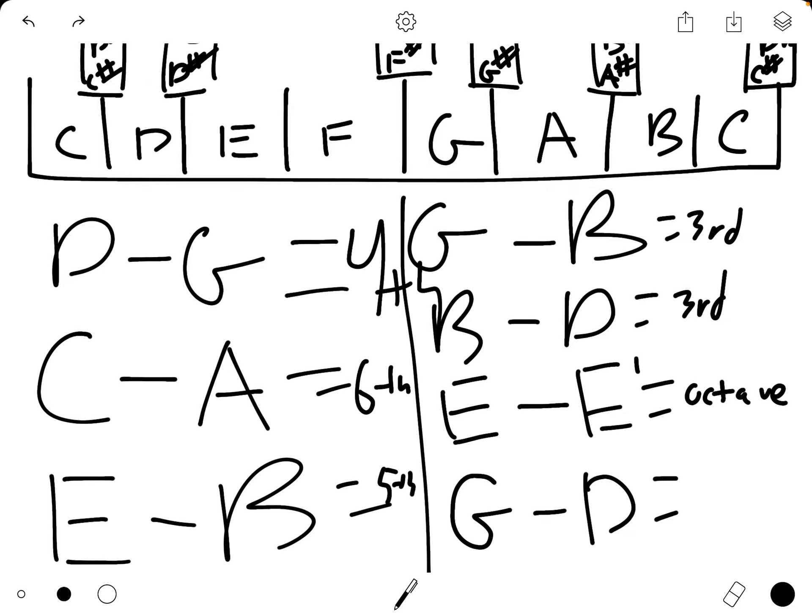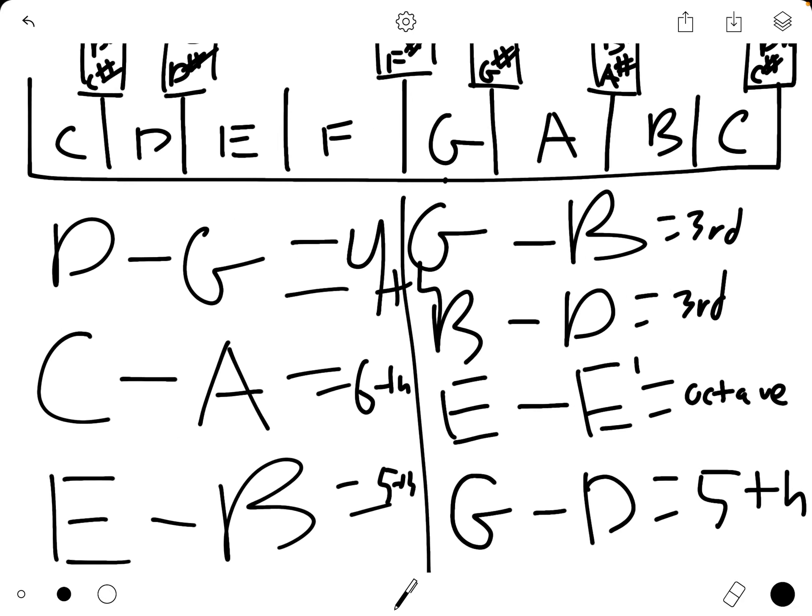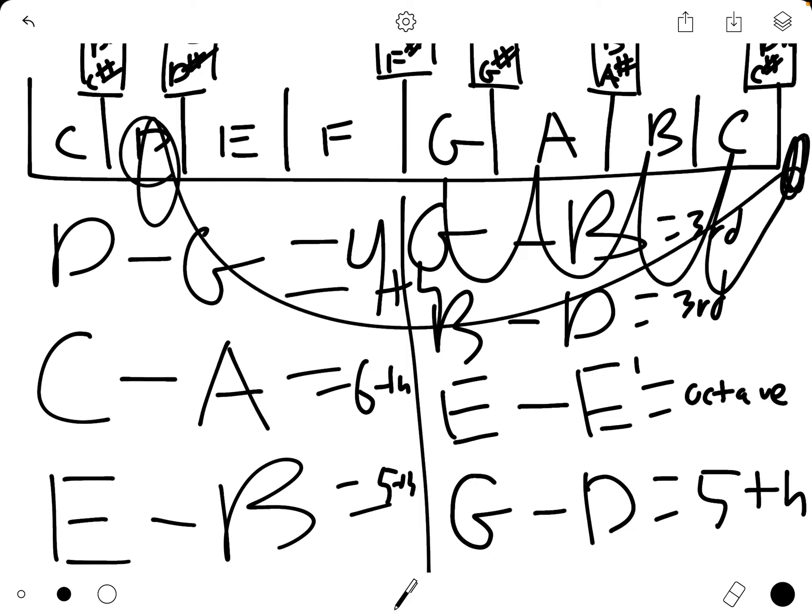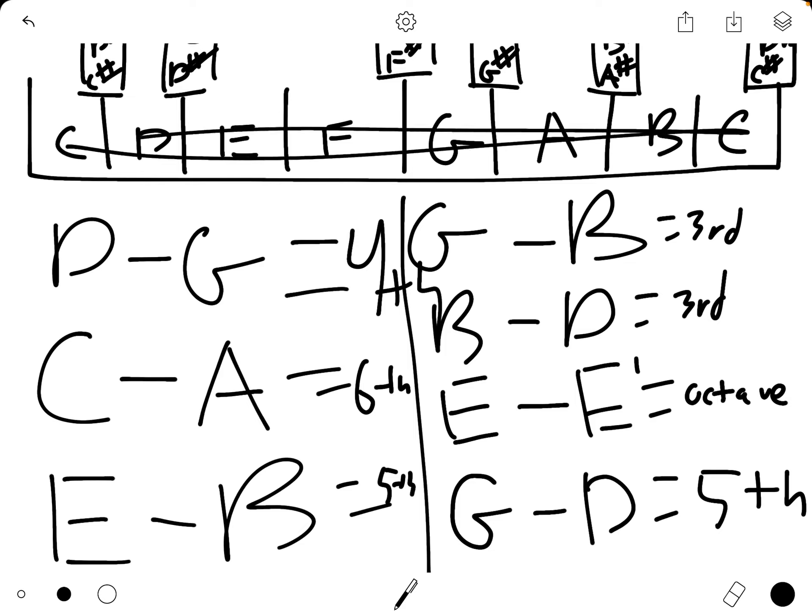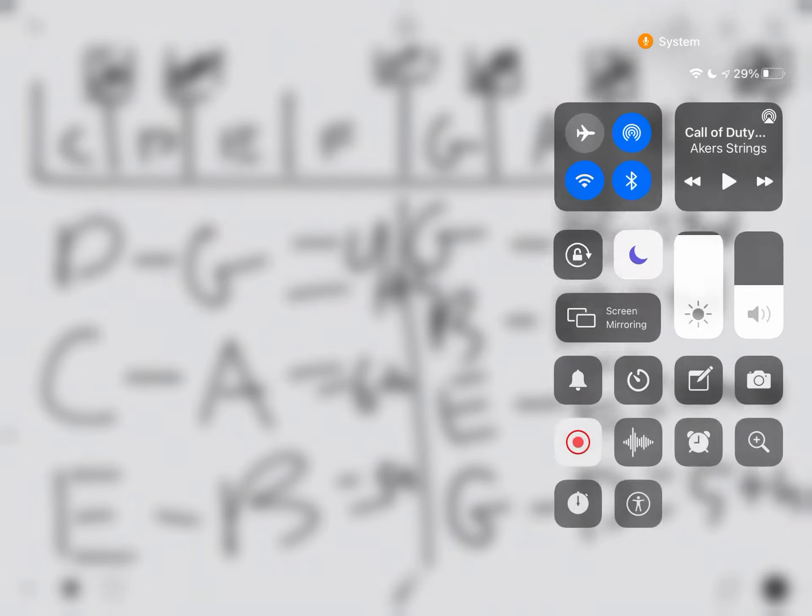And then from G going up to D is a fifth. Because we have one, two, three, four, five. This goes on infinitely in either direction. A piano is limited, but technically the notes exist above and below the range of the piano and the range of whatever instrument you play. Today's lesson only dealt with the natural notes right here. But as we dive into the sharp notes, it will make things a little bit different, but not quite. So if you have any questions, please let me know. Besides that, have an awesome day and good luck.